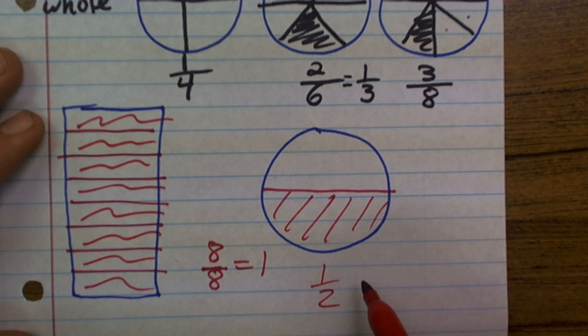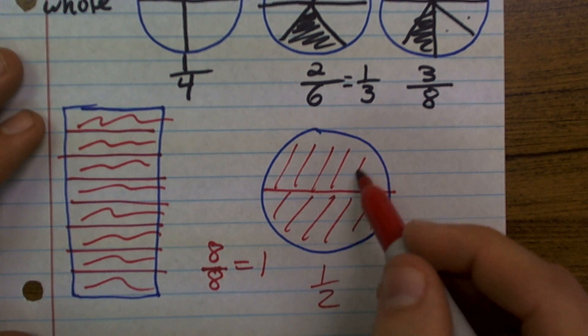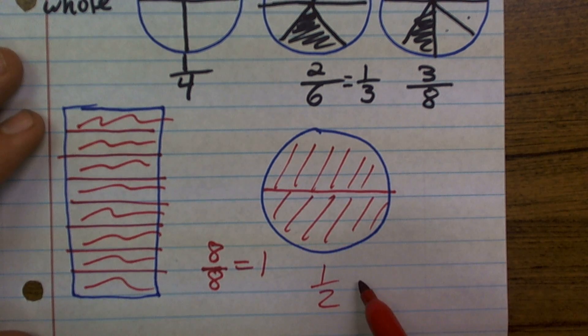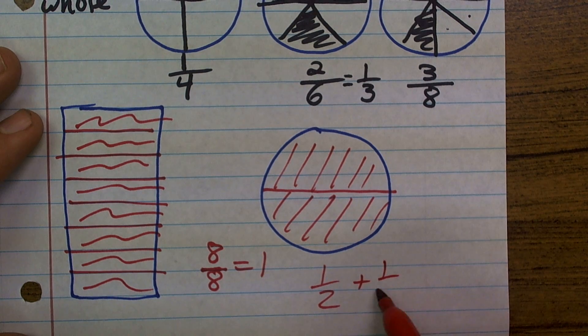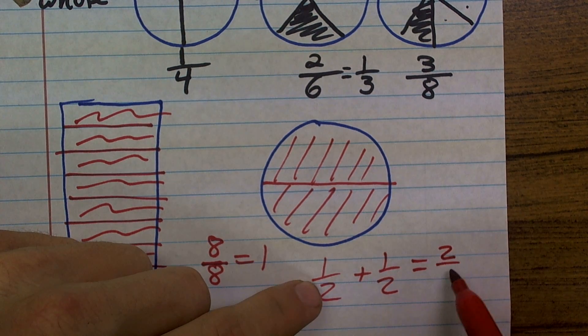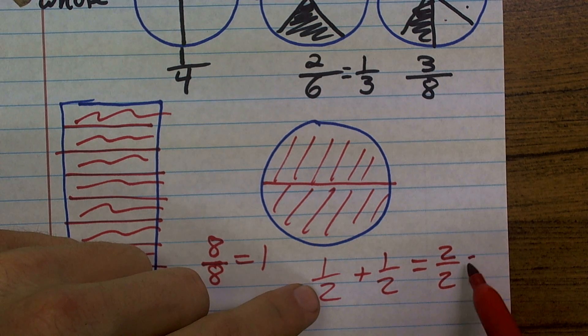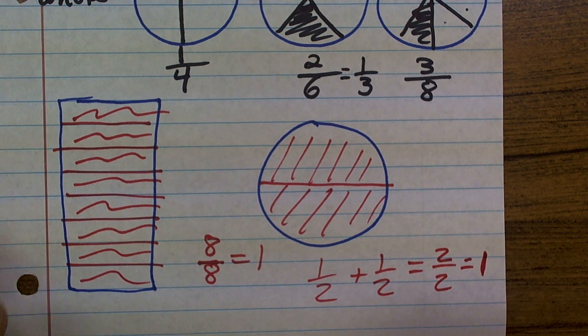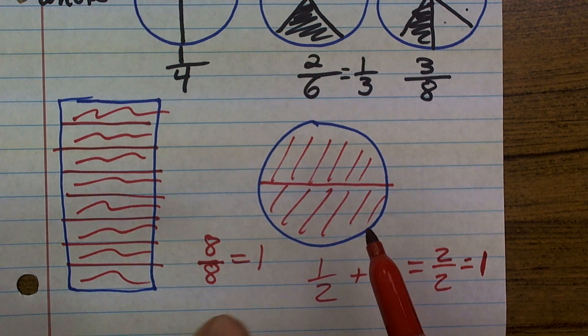Well, if I choose the other half, now what I've had is I've chosen a total, and I'm getting a little bit into adding here, but you have one half plus one half is going to equal two over two, which is going to give me one whole circle.